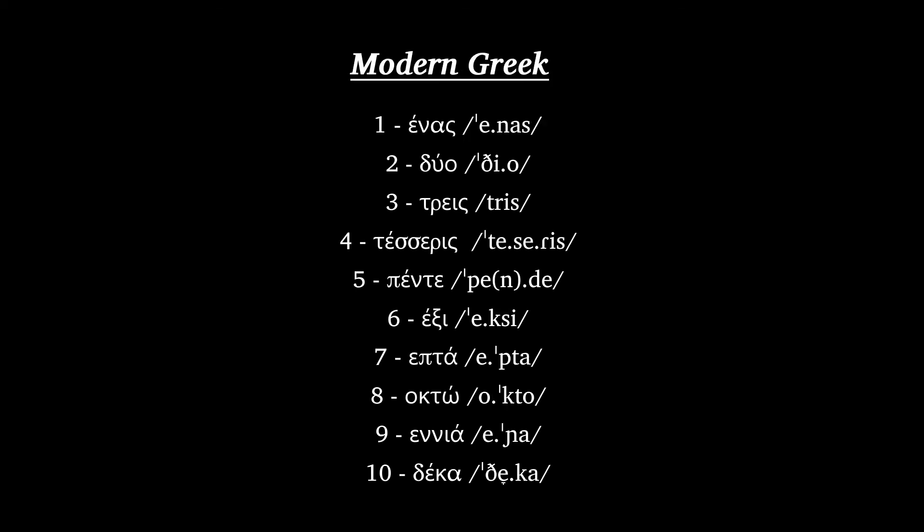And finally, Modern Greek: Enas, Dio, Tris, Tessares, Pente, Hexi, Hepta, Okto, Enea, Deka.